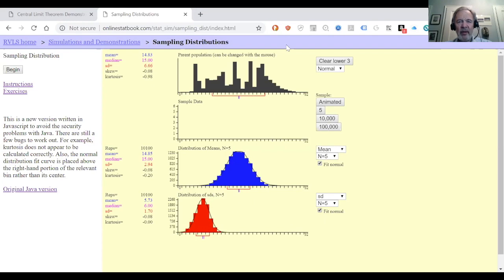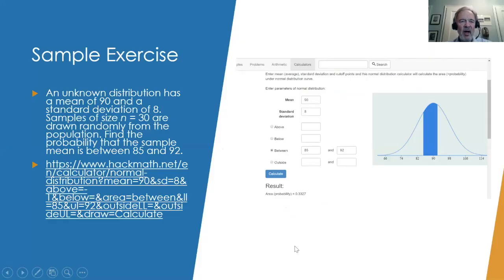So now let's go back and look at a typical problem. Consider this exercise. An unknown distribution has a mean of 90 and a sample standard deviation of 8. Samples of size n equal to 30 are drawn randomly from the population. Let's find a probability that the sample mean is between 85 and 92.